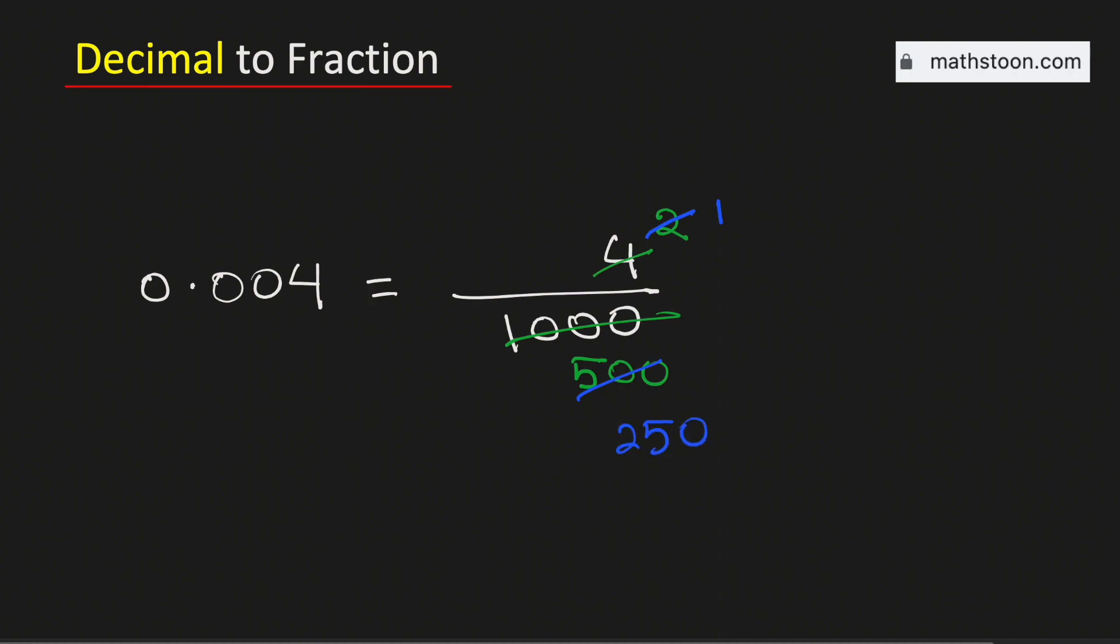So it is equal to 1 over 250 and it is simplified. Therefore the decimal 0.004 as a fraction in simplest form is equal to 1 over 250. And this is our final answer.